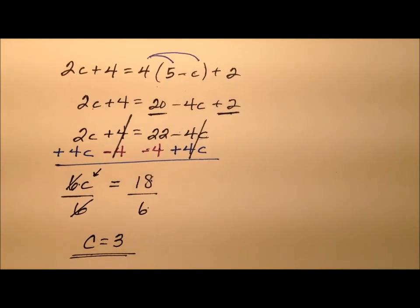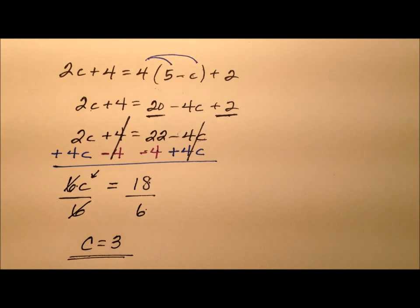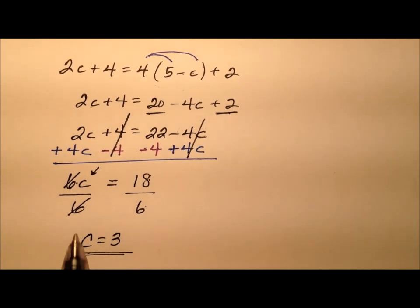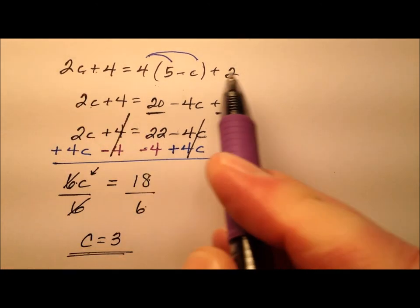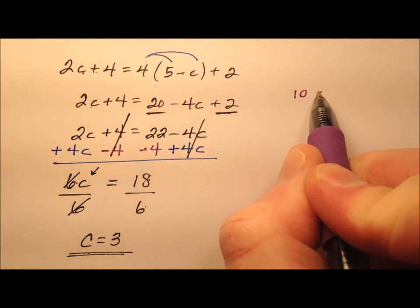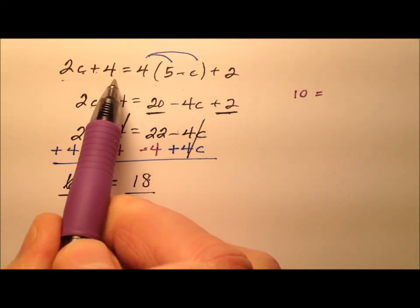So we're saying the value for our variable is 3. Let's go ahead and plug it back in just to make sure that it works. So if c is 3, 2 times 3 is 6, 6 plus 4 is 10. Okay, so that left side ends up being 10.